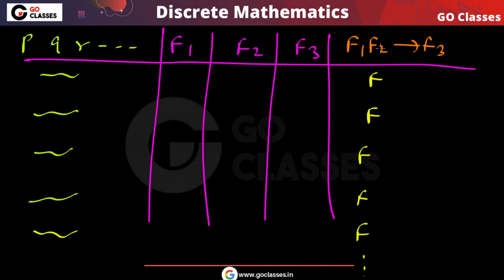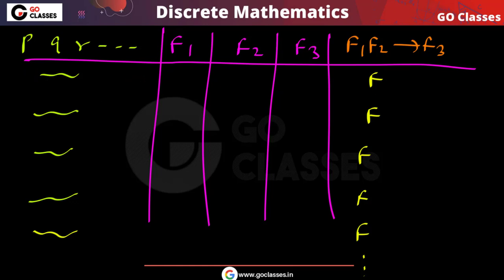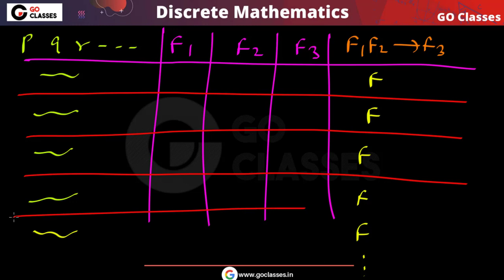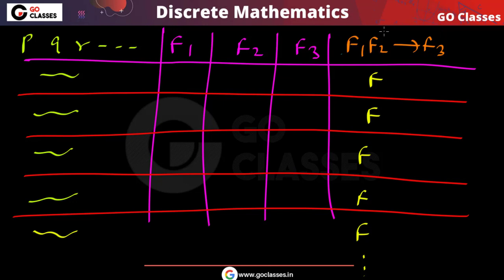Now, what can we say about f1, f2, and f3? For any combination, this implication must be false. If the implication f1 ∧ f2 → f3 is false, then the antecedent f1 ∧ f2 must be true, and f3 must be false. So for every combination, f3 must definitely be false.